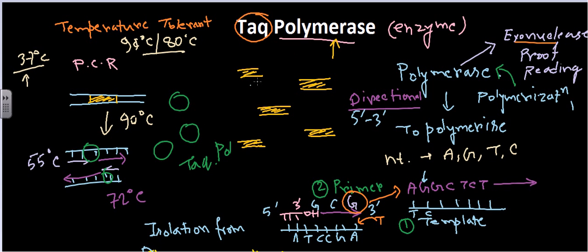Another important point about Taq polymerase is its exonuclease or proofreading activity. There can be two types of exonuclease activity: polymerization goes 5' to 3', and the exonuclease activity has directionality of 3' to 5'. However, Taq polymerase does not have this 3' to 5' exonuclease activity, which is a disadvantage — it is temperature tolerant, but it lacks proofreading.